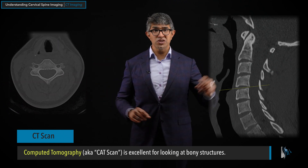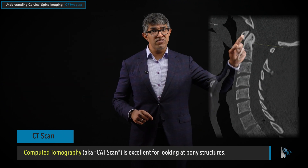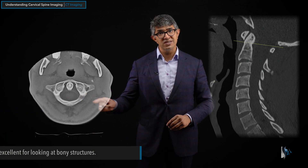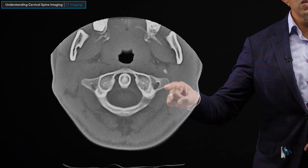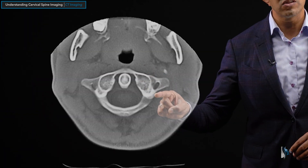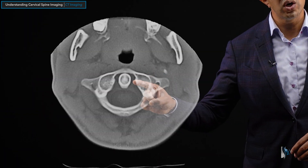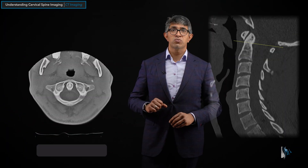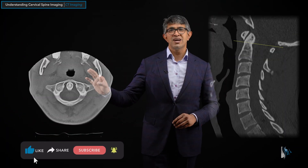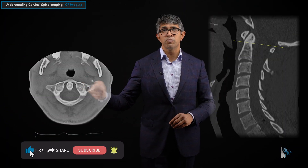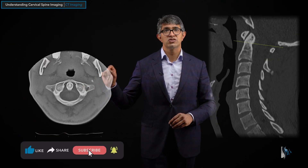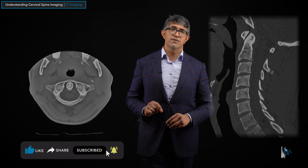These are high-resolution images, and if you take one up very high, you get an image that looks like this. Here's C1-C2, the lateral mass of C1, and what's called the odontoid process of C2. You can get really clear pictures of what the bony architecture itself looks like.